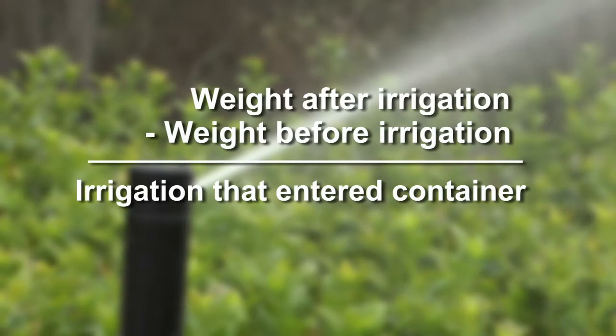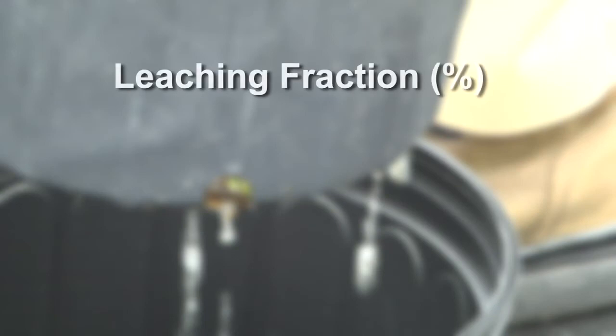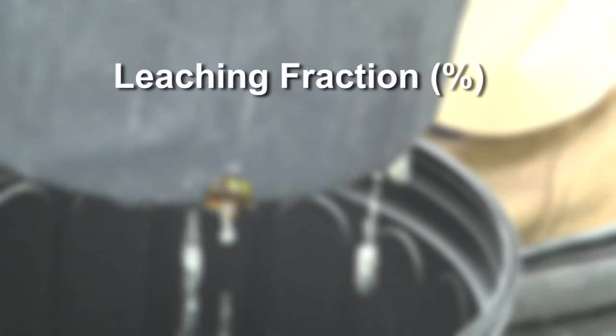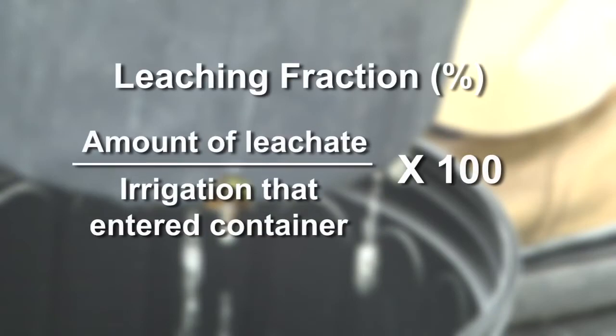The average weight after irrigation minus the average weight before irrigation equals the amount of irrigation that entered the container. Leaching fraction is the amount of leachate divided by the amount of irrigation that entered the container, times 100 to convert to percent.